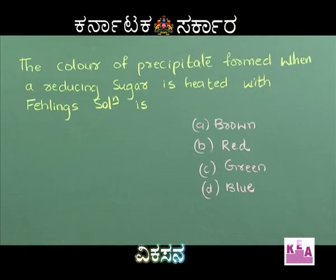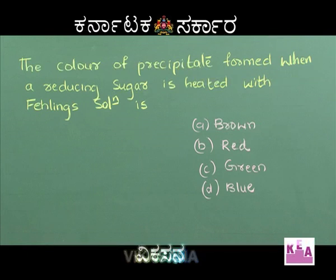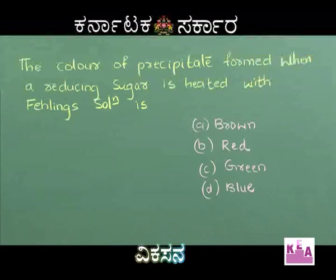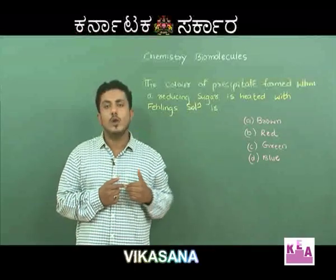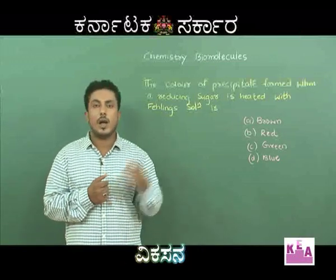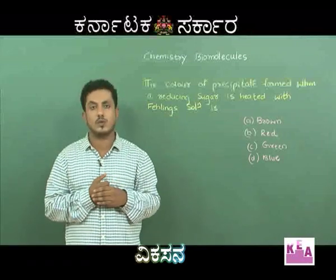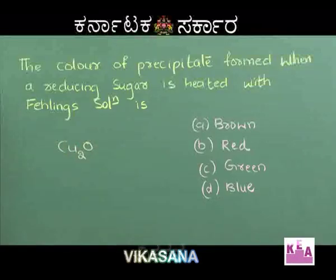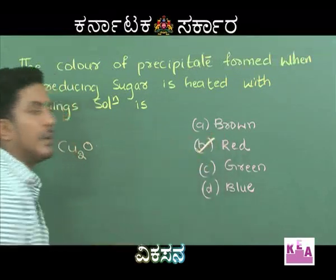The color of the precipitate formed when a reducing sugar is heated with Fehling's solution: Option A Brown, Option B Red, Option C Green, Option D Blue. Reducing sugars are sugars that reduce Tollens reagent and Fehling's solution. When a reducing sugar is treated with Fehling's solution, the sugar gets oxidized to the corresponding acid, and Fehling's solution gets reduced to a red precipitate of cuprous oxide. Hence, the answer is Option B: Red.